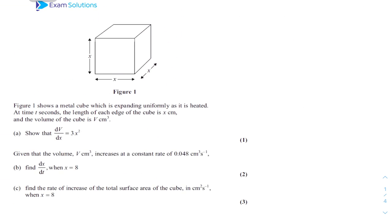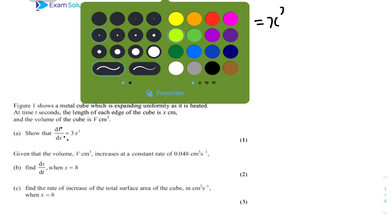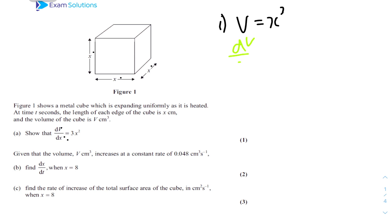For question 3, a table shows a metal cube which is expanding uniformly as it is heated. At time t seconds, the length of the cube is x cm and the volume is V cm cubed, so dV/dx = 3x². We know the volume of a cube is V = x³. Differentiating V with respect to x, dV/dx = 3x², by bringing the power down. That's how we prove it.